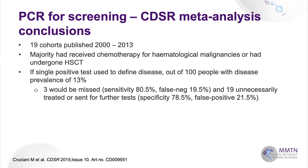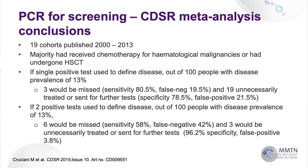If a single positive test is used to define disease in a setting where disease prevalence is 13%, three would be missed — that's a sensitivity of 80.5% — but 19 would be unnecessarily treated or subjected to further testing. If you take two positives, you'll miss six, but only three would be unnecessarily treated or sent for further tests. There is no standalone test; everything must be interpreted in context and perhaps with other tests.